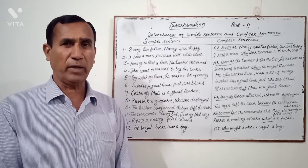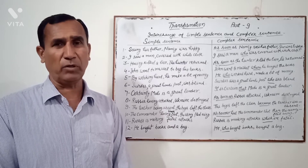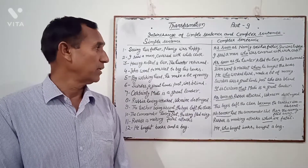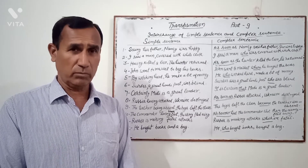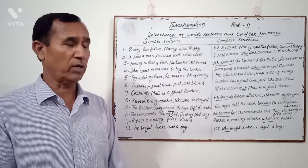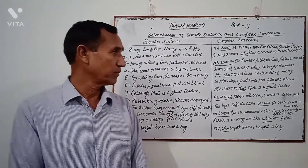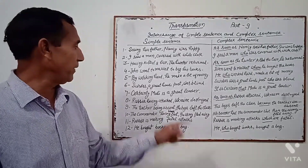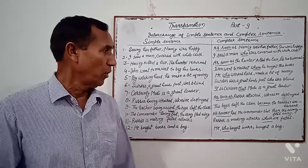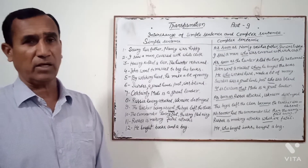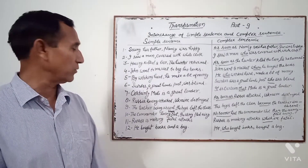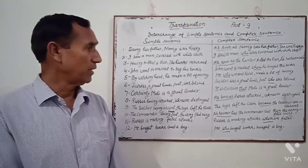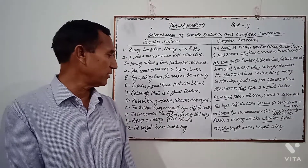Complex: "As soon as Russia attacked, Ukraine destroyed." Simple: "Russia having attacked, Ukraine destroyed." Complex: "Boys left the class because the teacher was absent." Simple: "The teacher being absent, the boys left the class." Complex: "No sooner had the commander been shot than the army fled away." Simple: "The commander having been shot, the army fled away."